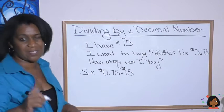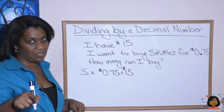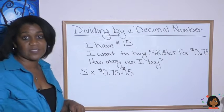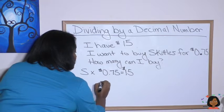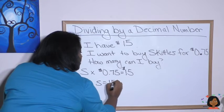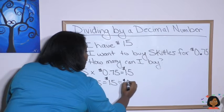Okay. This is a missing number in multiplication. And what do we do to find a missing number in multiplication? Yes. We do the opposite. We divide. So we're going to divide. Let's write it like this. S equals $15 divided by 75 cents.